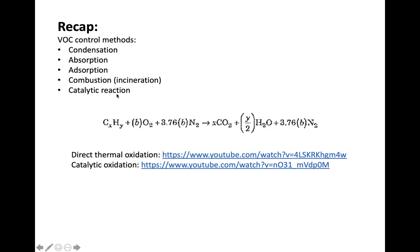In terms of combustion and catalytic reaction, we have direct thermal oxidation and catalytic oxidation. Direct thermal oxidation is the process of hydrocarbons reacting with oxygen without any catalyst, so we generally need to burn off the VOC at a relatively higher temperature. For catalytic oxidation, it happens at a lower temperature. Here we'll just focus on direct thermal oxidation, and one key design goal is finding the optimal temperature for the incineration process.